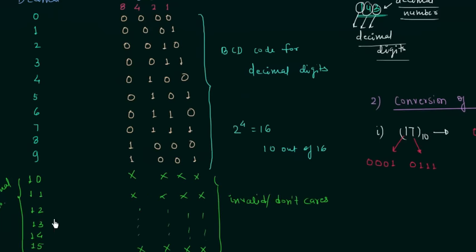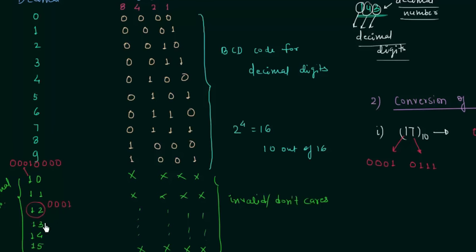Similarly, to represent 10 in BCD: 1 is 0001 and 0 is 0000, giving 0001 0000. To represent 12 in BCD: 1 is 0001 and 2 is 0010, giving 0001 0010. This is the BCD representation of 12.